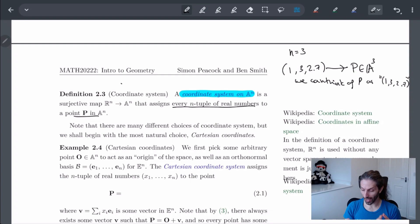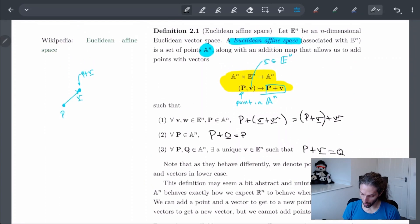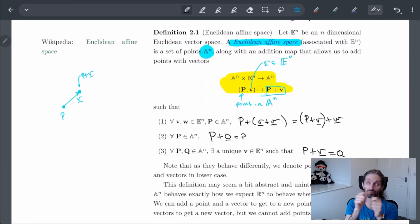We looked at Euclidean space and we said well, we don't just want vectors, we want points. And so we added all these points and we said these points have to satisfy these things, and then we were like whoa, this is way too abstract.